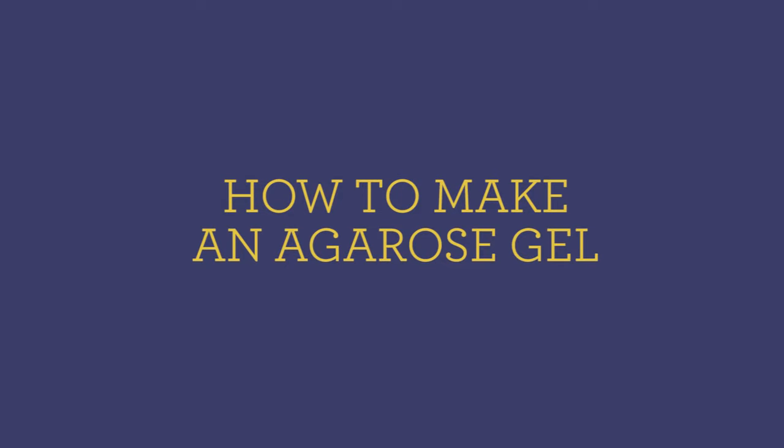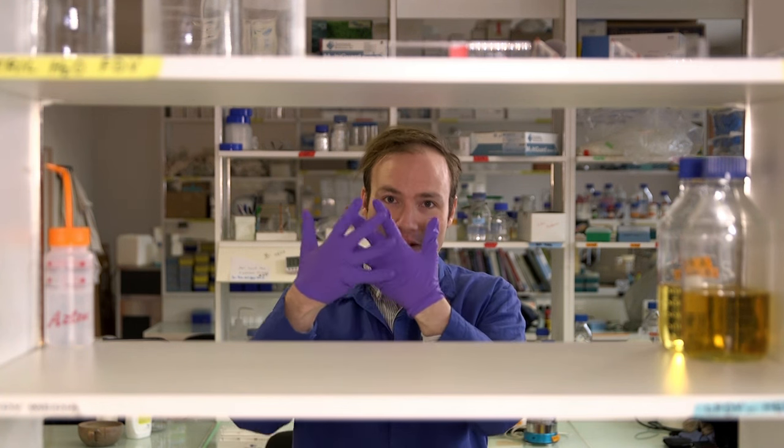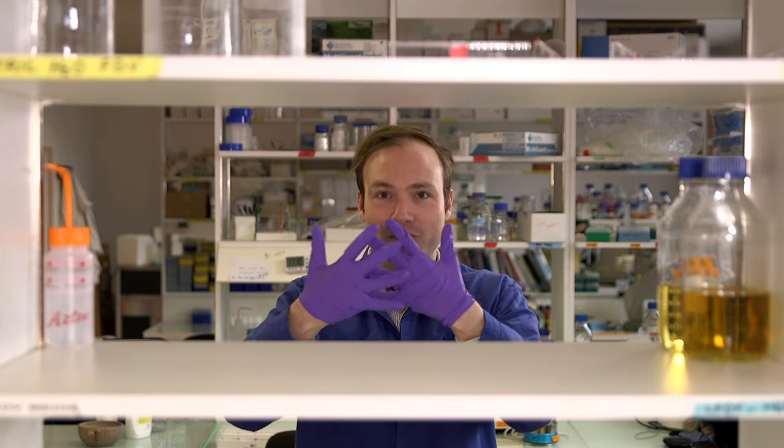As you'll see, an agarose gel is basically just a big old block of jello. Because DNA has a strong negative charge, we can use an electric field to pull DNA through this block. The agarose fibers form a tight, tangled meshwork that DNA can only move through very slowly. Small DNA fragments move faster and large DNA fragments move more slowly. This allows us to separate pieces of DNA according to their size.